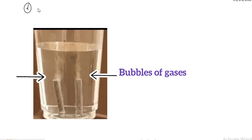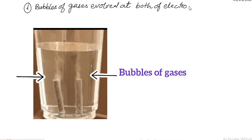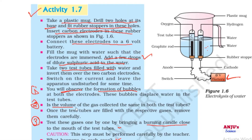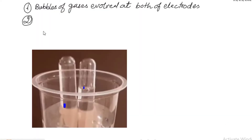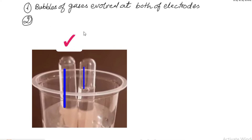First observation: bubbles of gas are formed at both electrodes. Second observation: the volume of gas collected is not the same in both test tubes — we observe that the gas on one electrode was more than the other, with the volume of one gas being double that of the other.